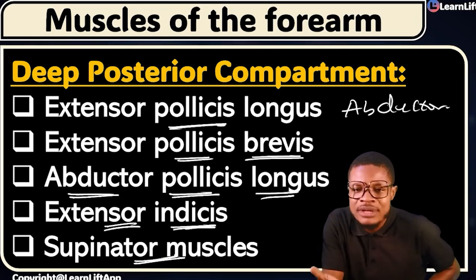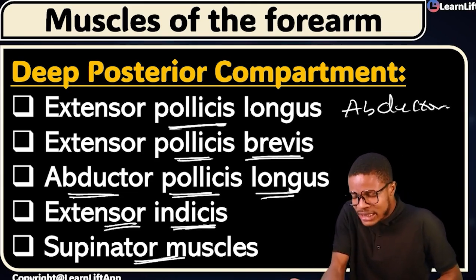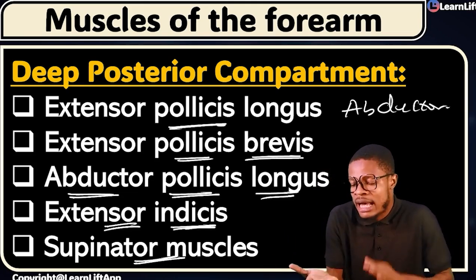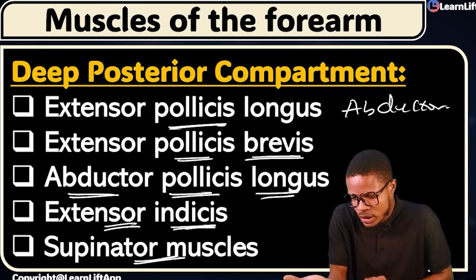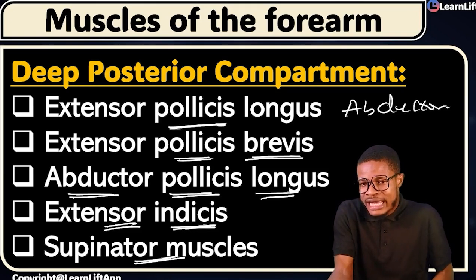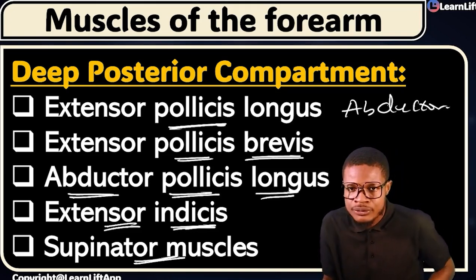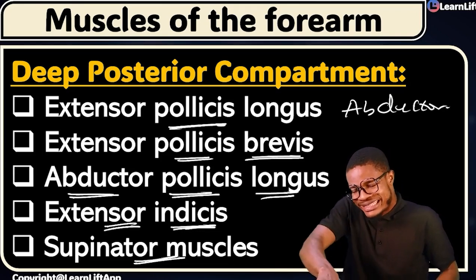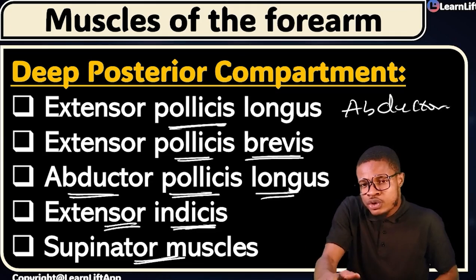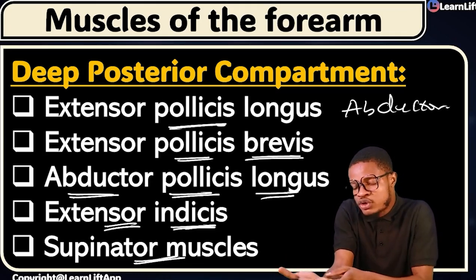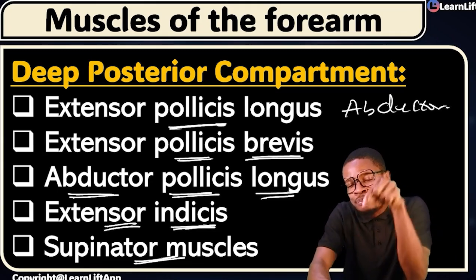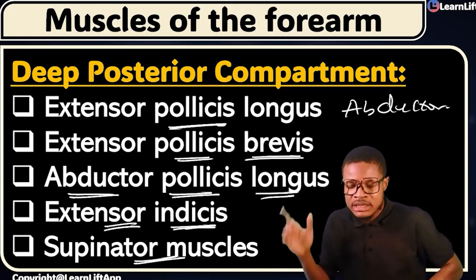The last muscle, number five, is the supinator muscle. From the name, it will supinate. Just imagine you are carrying a cup of water in the palm of your hand — that's the supinator muscle at work. It is antagonistic to the pronator muscle. The pronator muscles are pronator teres and pronator quadratus, and the supinator muscle is located in the deep posterior compartment of the forearm.